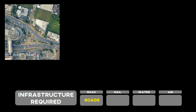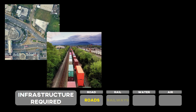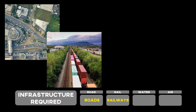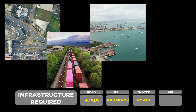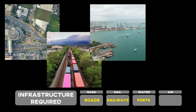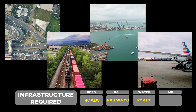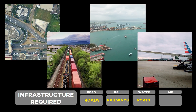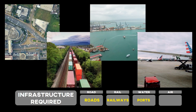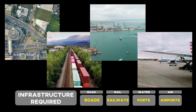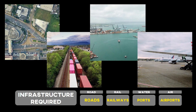Now let's talk about infrastructure. Road transport requires a road network. Rail transport requires railways and terminals. Water transport requires ports, docks, and navigable waterways. Air transport requires airports and air traffic control infrastructure, that is ATC.